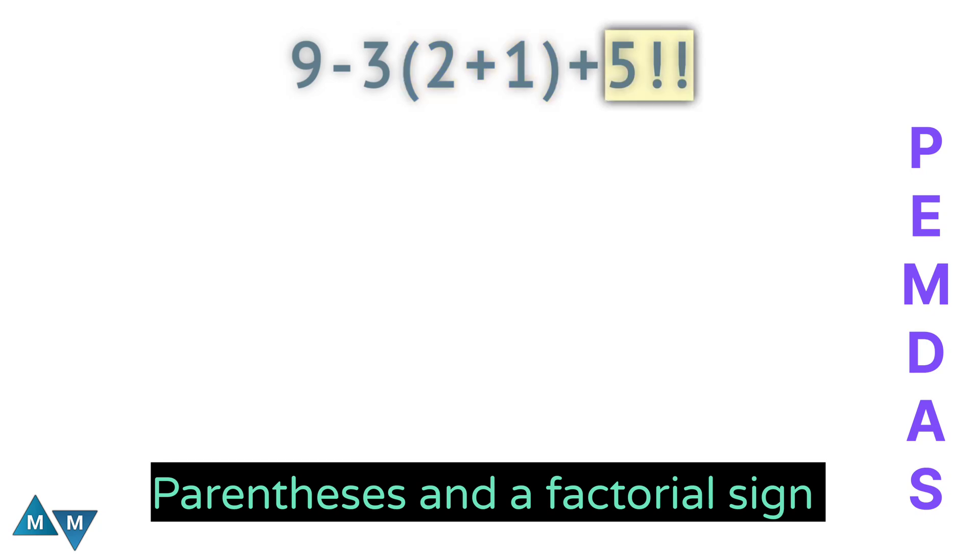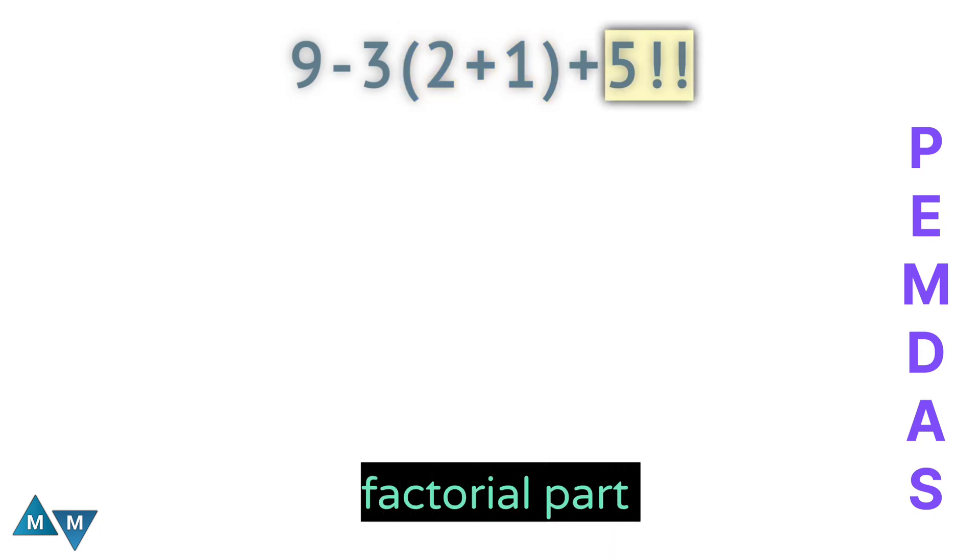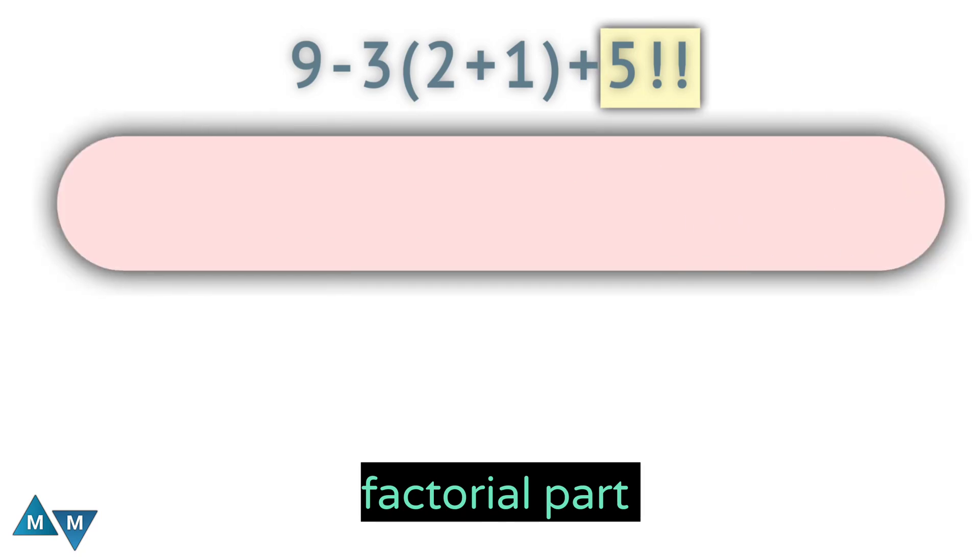Let's first solve this factorial part. So what is the factorial of a number? When a number has a single exclamation mark, we call this number a factorial. How much is a factorial? You take a number and multiply its predecessors until you reach one.